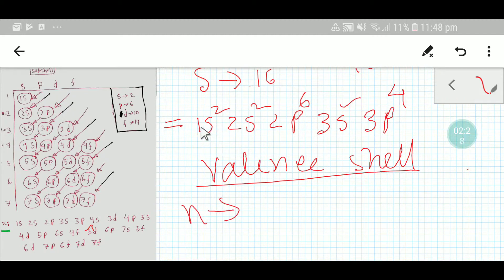So here the value of n is 1, 2, 3. And to find out the valence shell, we will consider the highest number of n. That is, the highest value of n indicates the valence shell.